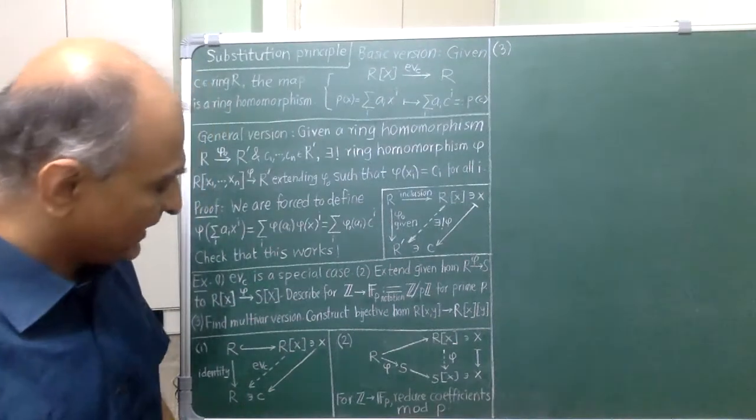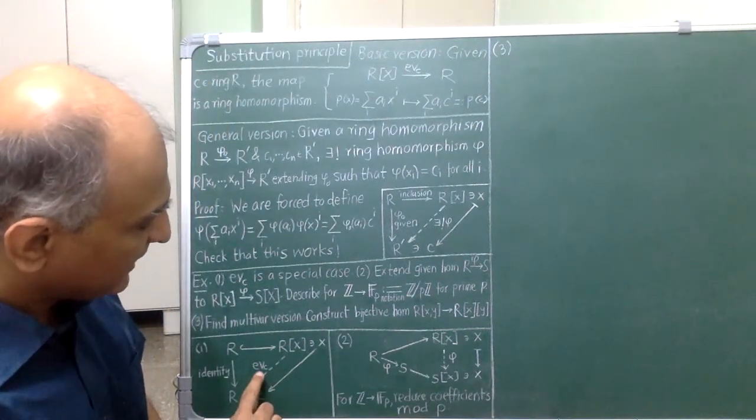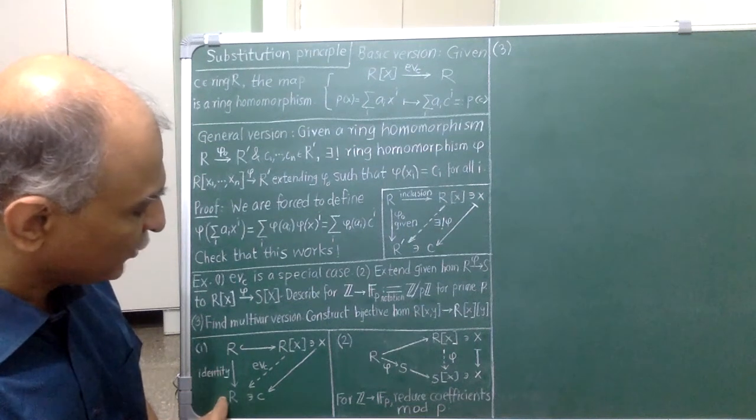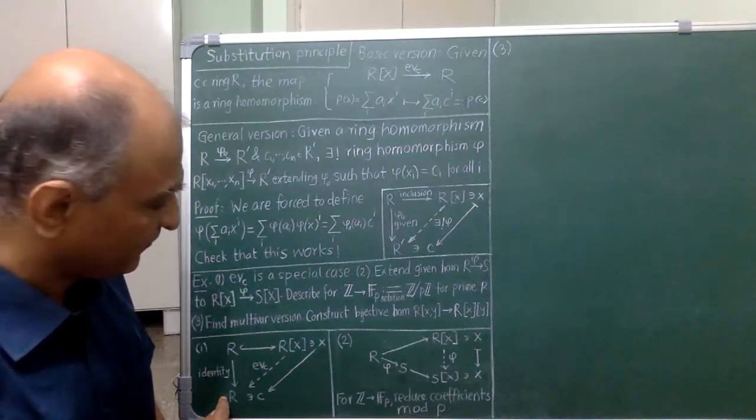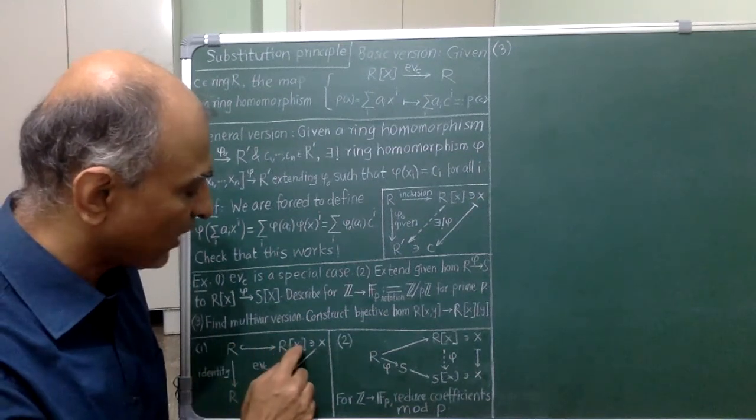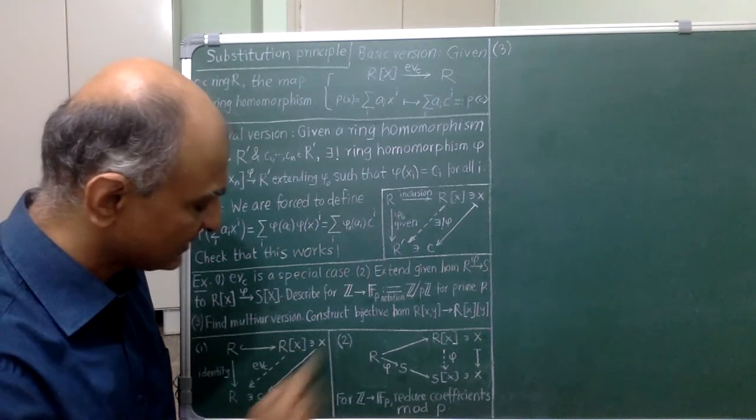In exercise 1, I get evaluation at C by starting with the identity homomorphism from R to R and using the substitution principle to extend it to R[x] by sending x to C.